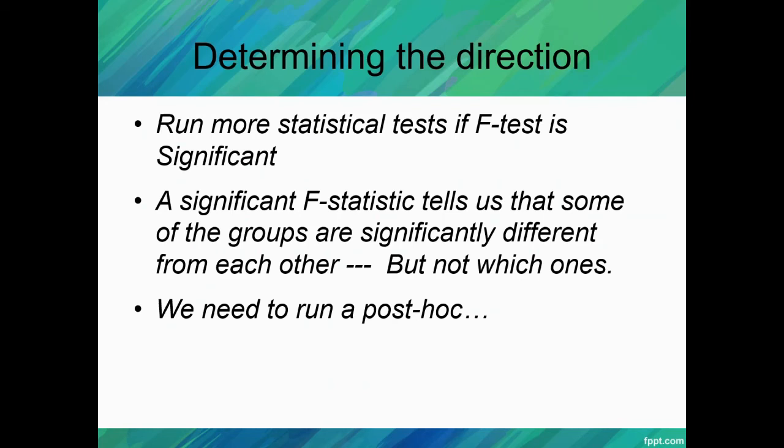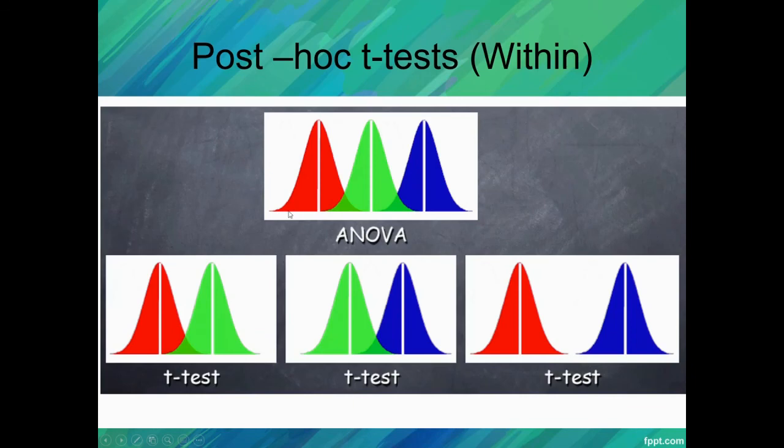It's going to tell us if there's a difference between group A and group B, or group B and group C, or group A and group C. Before running a post-hoc, we don't know. Our F-statistic will just say that there is a difference. Our post-hoc is going to run comparisons between the groups so that we can find out which two are significantly different from each other.